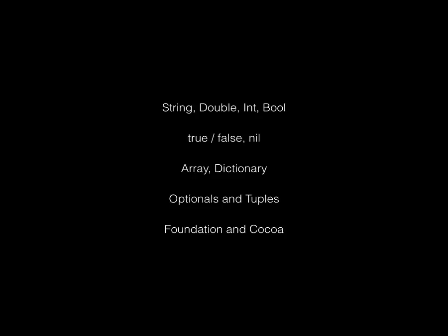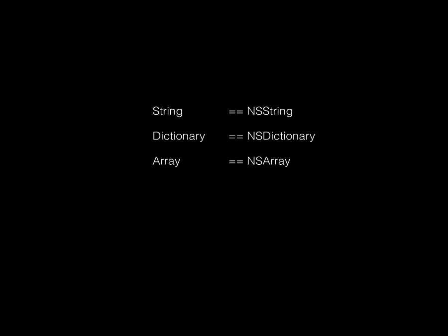You've still got everything from Foundation and Cocoa, so NS Sets are still there as are all other types. But you get automatic crossover to Swift data types: NS Strings, NS Dictionaries, and NS Arrays automatically cast into Swift Strings, Dictionaries, and Arrays, and those items have all the same properties and methods. So a Swift String accessed with a dot gives you all the same properties and class methods you're used to with NSString.